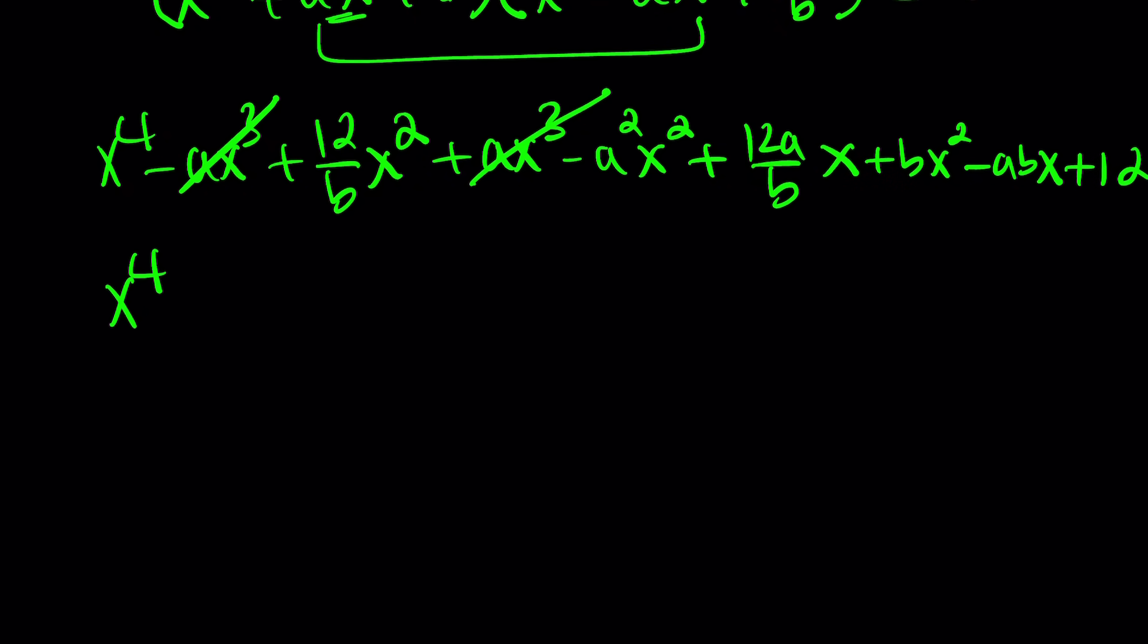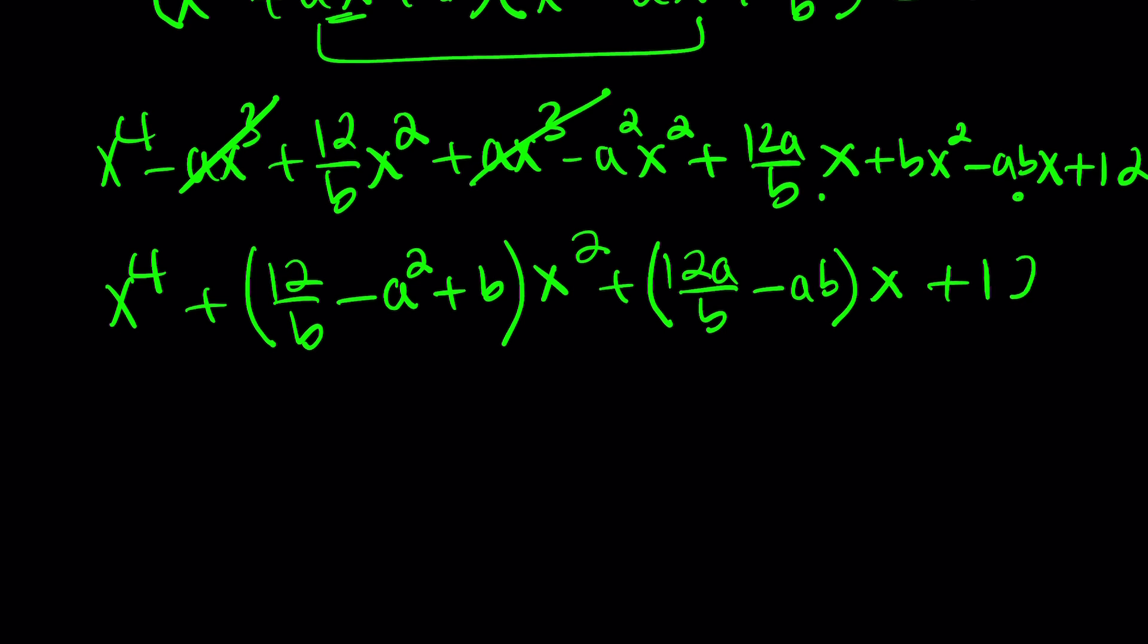That's our constant. Let's go ahead and rearrange the terms. X cubed is going to cancel out for sure. And the coefficient of x squared is 12 over b minus a squared plus b. The coefficient of x is 12a over b minus ab. And the constant is 12.